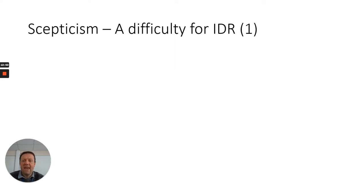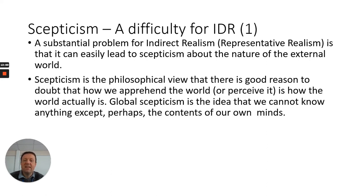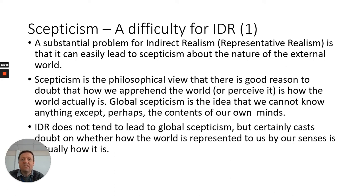Indirect realism or representative realism can lead to scepticism as a result of these arguments. A substantial problem is that there is no good reason to believe that the world is not represented to us in a way that might not be as it actually is. Scepticism is the philosophical view that there is good reason to doubt that how we apprehend the world is how the world actually is. Representative realists are not global sceptics — they don't believe we cannot know anything except the contents of our own mind — but they do believe there is at least some doubt about whether what we see is an accurate representation of the world, and whether or not we can know that world correctly.